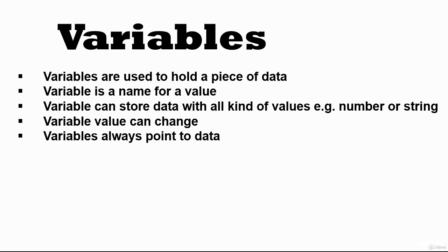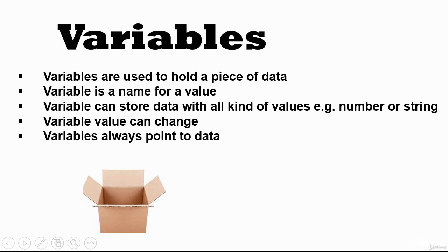Variables always reference or point to a piece of data. Think of a box you decide to call 'chocolates' — you store all kinds of chocolates inside it. Today you put in cream chocolates; tomorrow you can change that to dark chocolates. That's in effect what a variable is — a storage container for a piece of data.